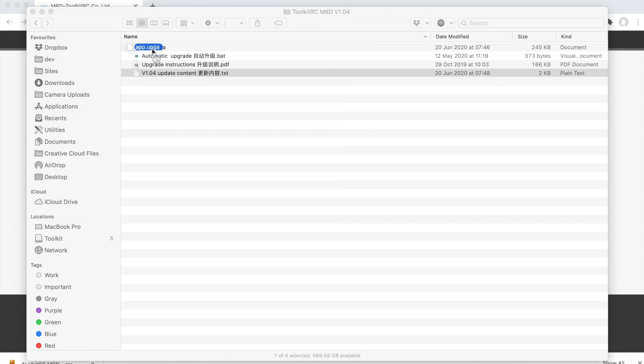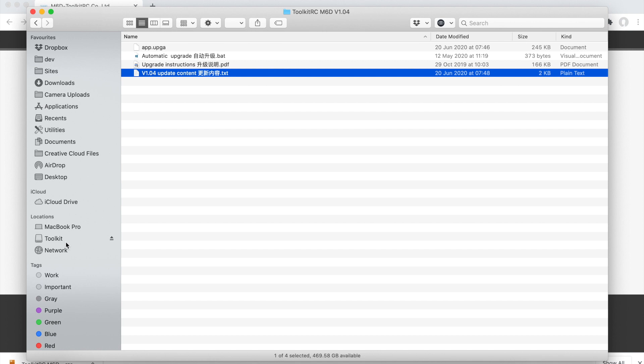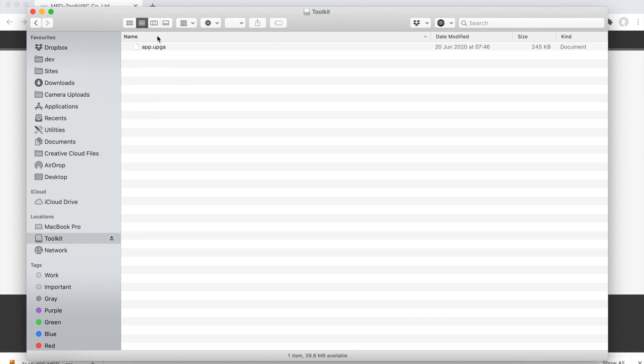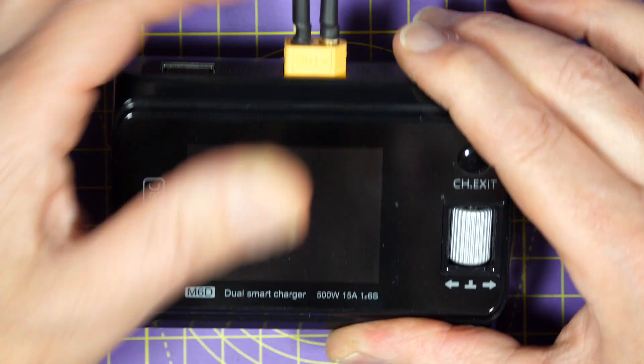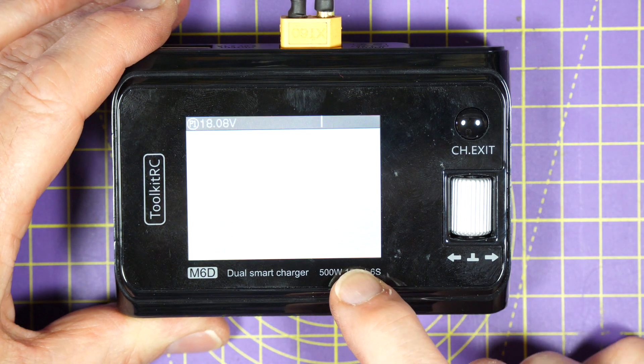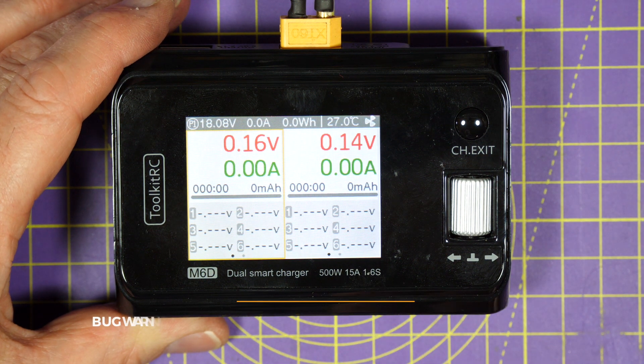To upgrade, just drag the binary file onto the toolkit. That's it, you're done. You can see here that you've got your new firmware sitting on the Toolkit RC. Let's plug it in again and just check we've got an upgrade. There we go, 1.04 flashed by.